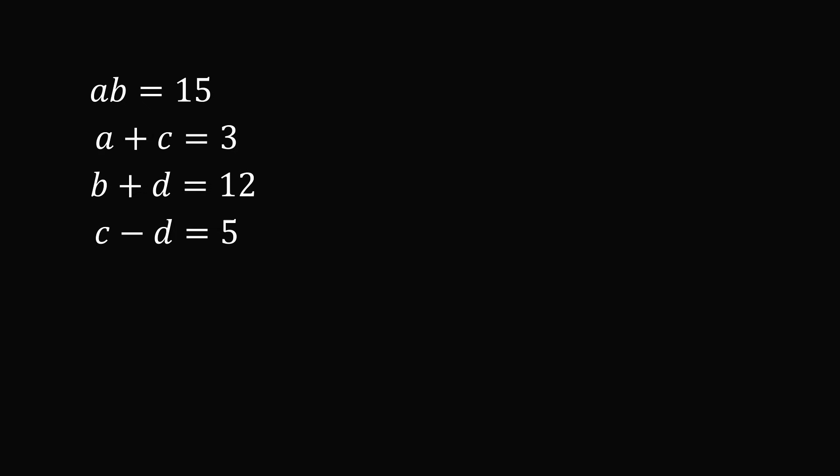So, looking at the third and fourth equations, we have b plus d and c minus d. So, if we add up these equations, we will eliminate the d variable. So, let's take the third equation and the fourth equation and let's just add them together. Doing this, we'll eliminate the d variable and then we have b plus c is equal to 17.